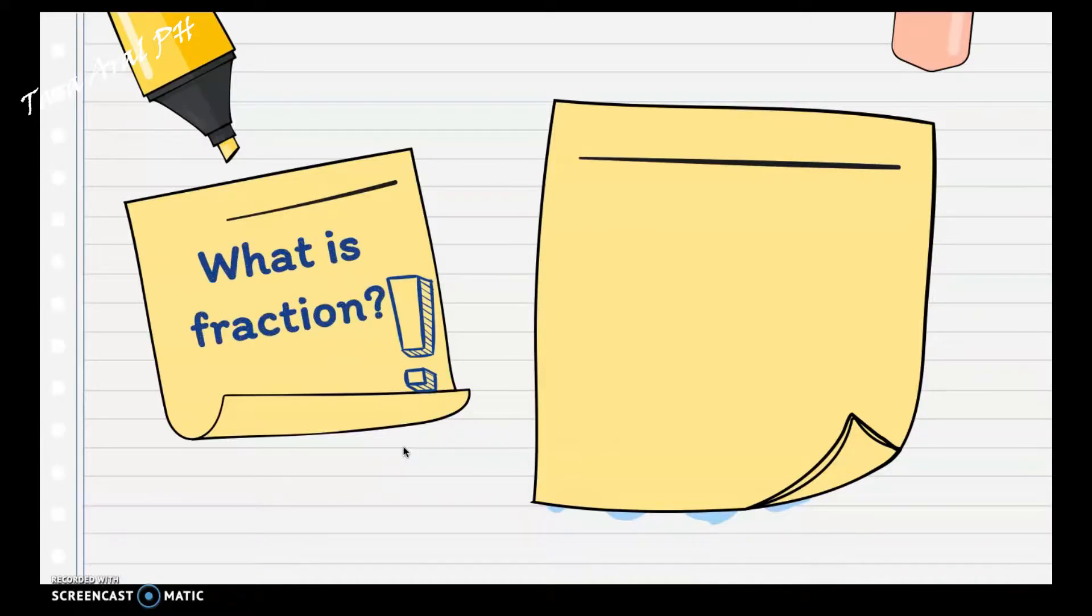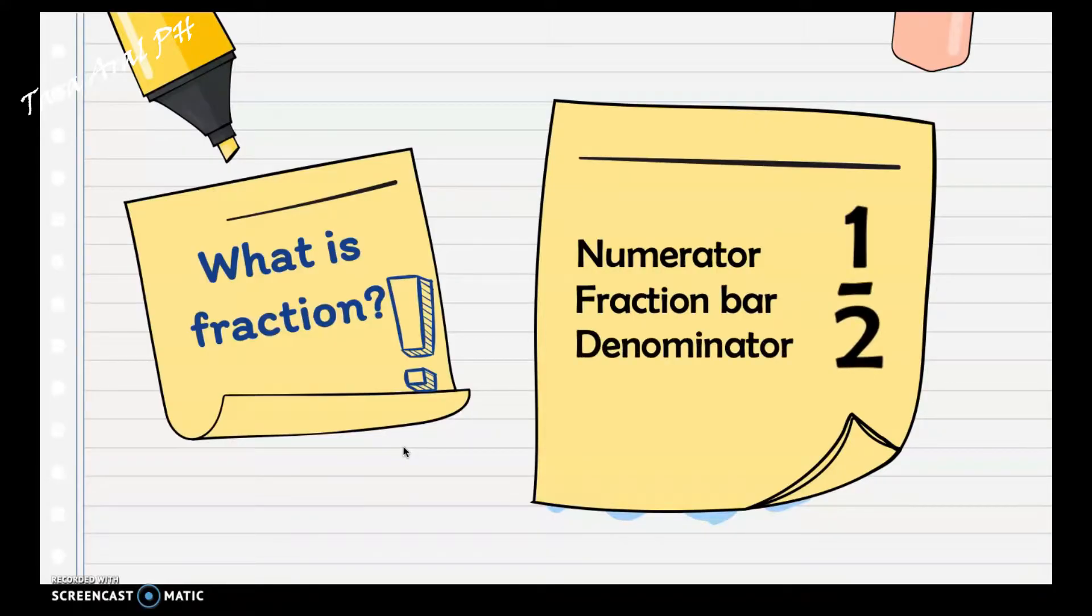What is fraction? A fraction is a number which can be written as the quotient of two whole numbers. This is an example of fraction 1 over 2, and 1 is the numerator which tells how many parts are taken from the whole, and that's the fraction bar that separates the numerator from the denominator, and 2 is the denominator that tells how many equal parts the whole is divided into.